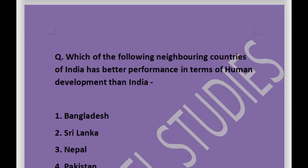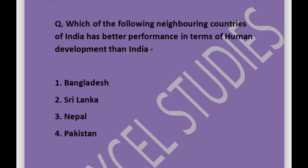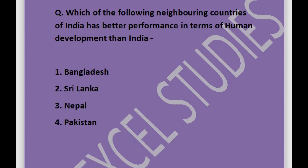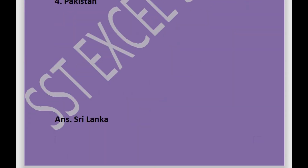Next question: which of the following neighbouring countries of India has better performance in terms of human development than India? Options are Bangladesh, Sri Lanka, Nepal, or Pakistan. Answer is Sri Lanka. That is all for today — I hope you liked the video.